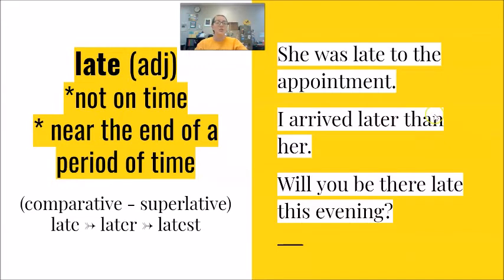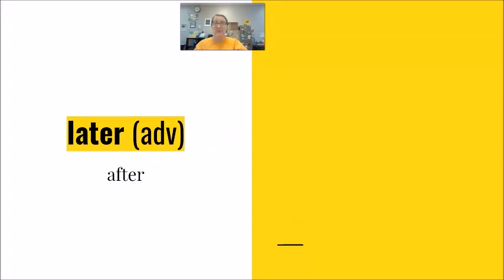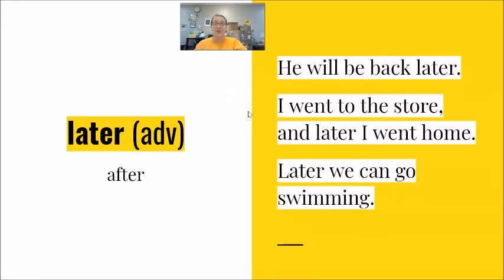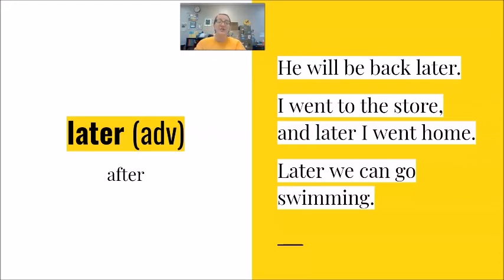Sometimes the word later can be the adjective form, but also later can be the adverb form to tell after. For example: he will be back later — after one event, he will be back. I went to the store and later I went home — first event, I went to the store; after the store, I went home. Later we can go swimming — I am talking to my daughter and I say, after something, we can go swimming.